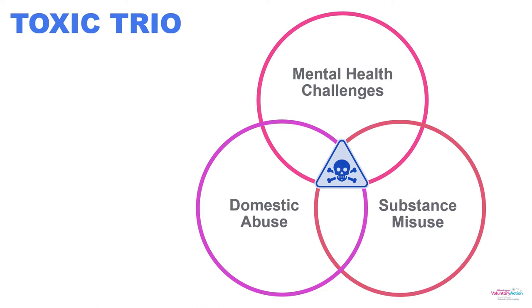As a red flag, if somebody is talking to you and you can identify some of these things, it might be worth considering: are there children in the household? Is this something we maybe need to raise as a concern? Because these three situations could well be preventing somebody from giving the support and care to those children and young people that they need — they're trying, but not able to, because they're caught up in these situations.